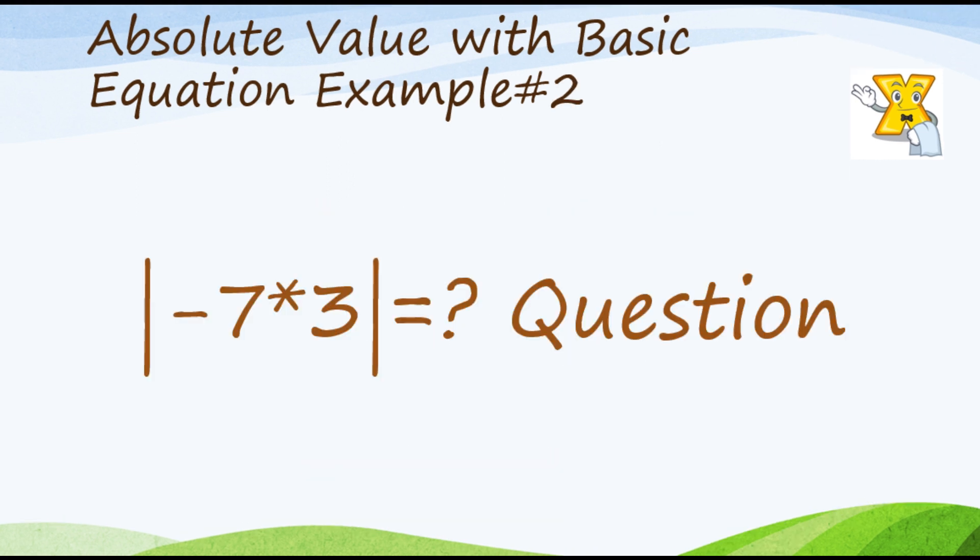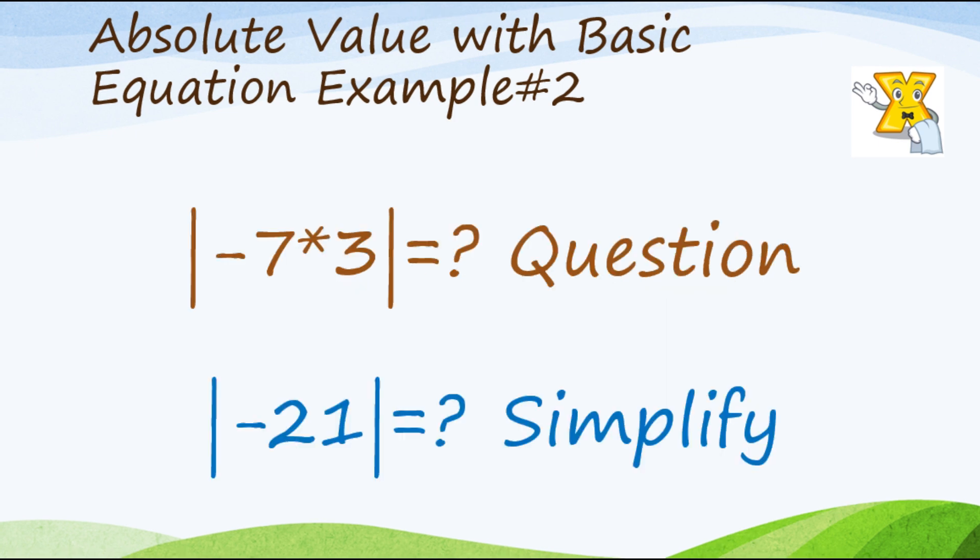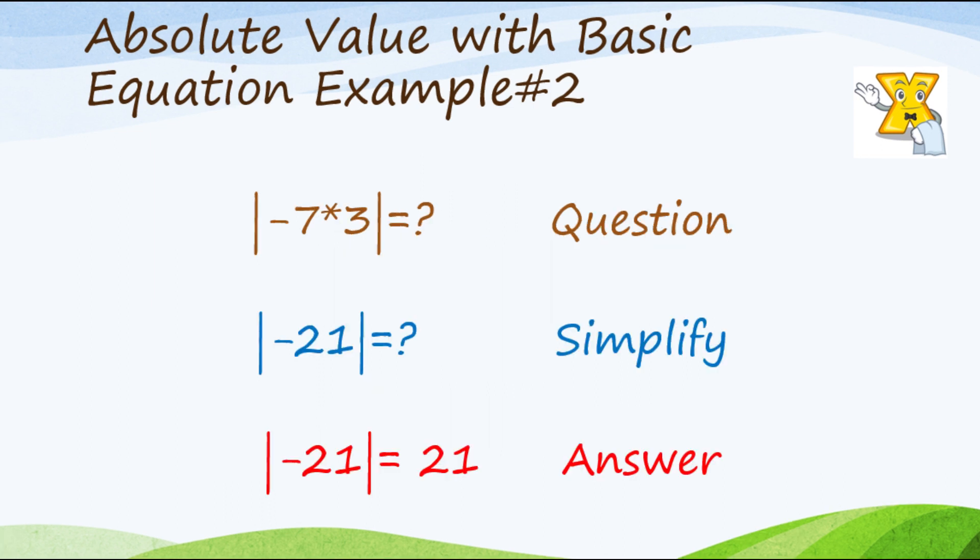Next example tayo. Paano naman kung find the absolute value ng negative 7 times mo ng 3? So as usual, sagot na mo muna yung nasa loob. So that will be negative 21. So pwede mo nang kunin yung absolute value nun. So magiging sagot mo ay 21.